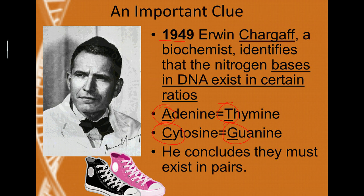So he concluded that they must come in pairs — kind of like shoes. If you have 15 right pairs, you're going to have 15 left pairs. So if you have 15 A's, you're going to have 15 T's. This has come to be known as Chargaff's base pair rules: adenine always goes with thymine, and cytosine always goes with guanine.